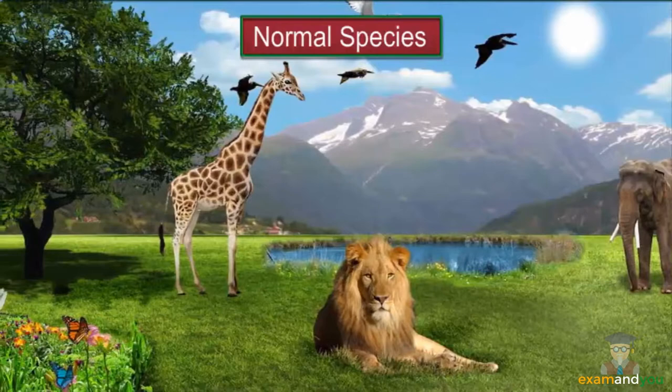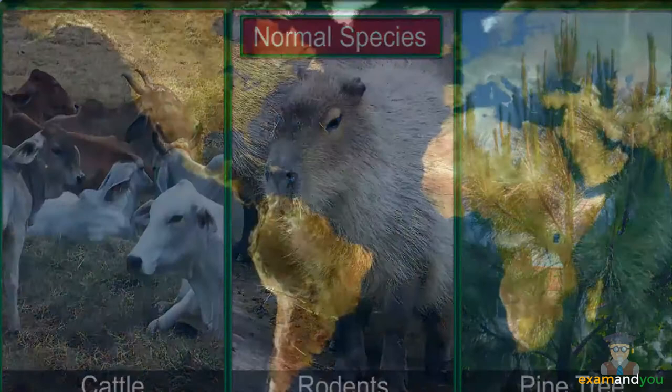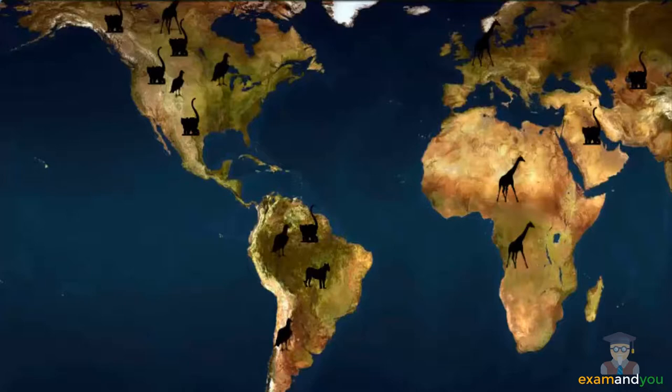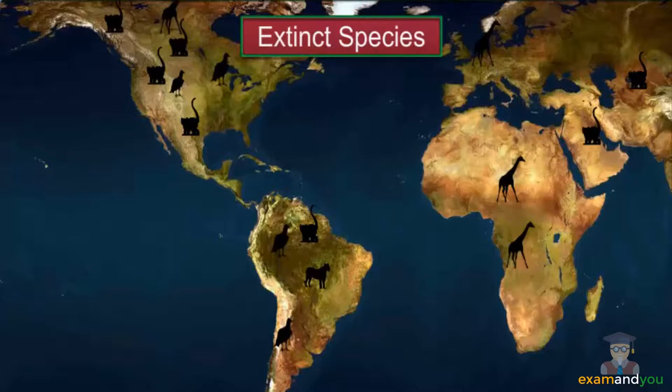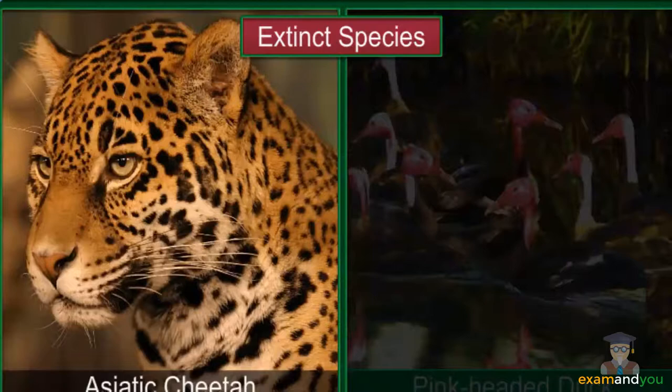Normal species include cattle, rodents, and trees like pine and sal. A species that cannot be found after prolonged search in its area of habitation is called an extinct species. A species may be extinct from an area, a country, or the entire Earth. Some such species are the Asiatic cheetah and the pink-headed duck.